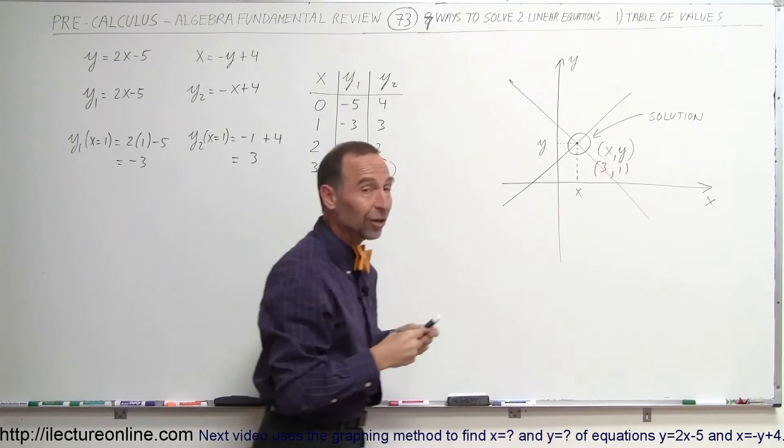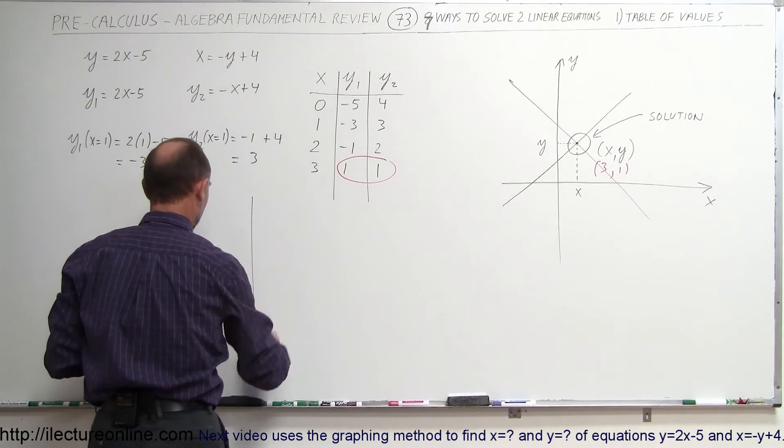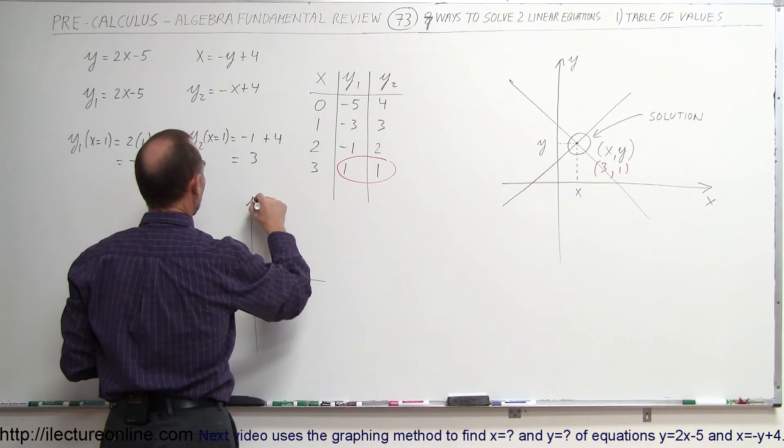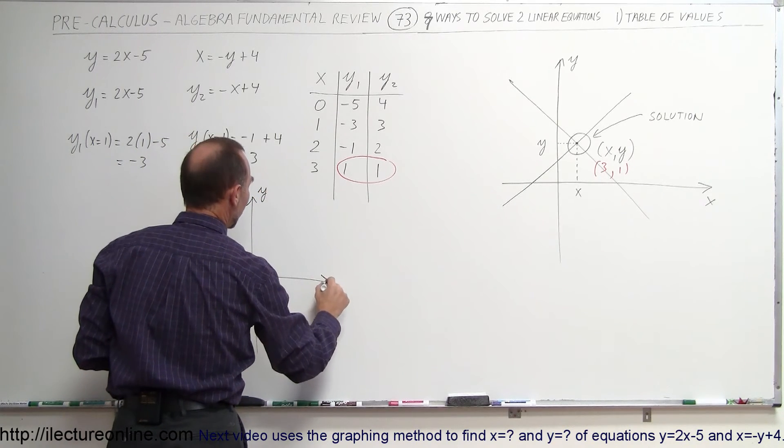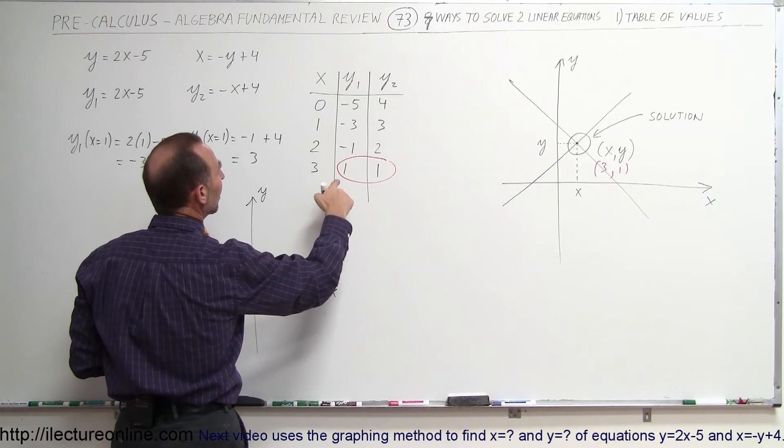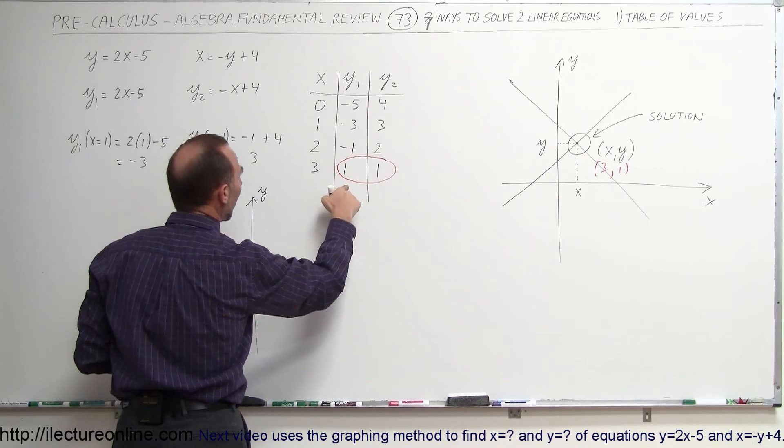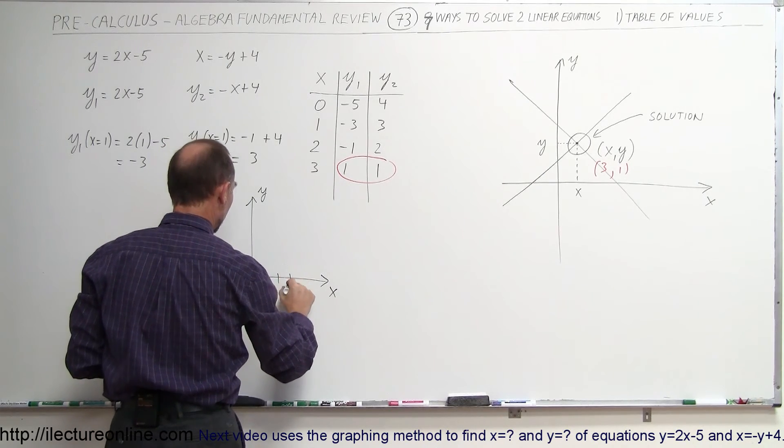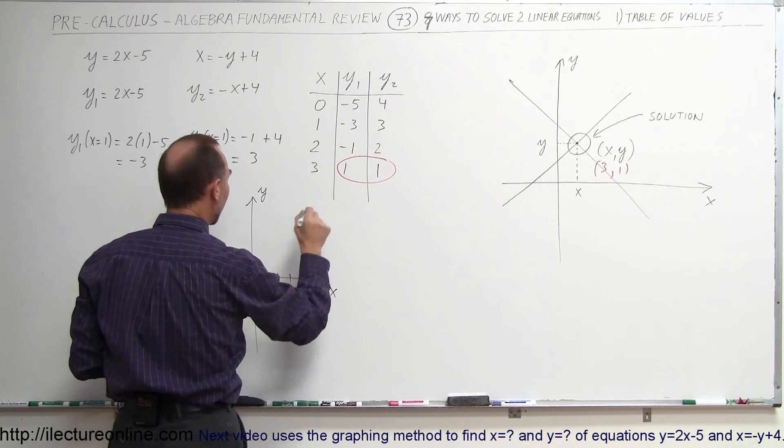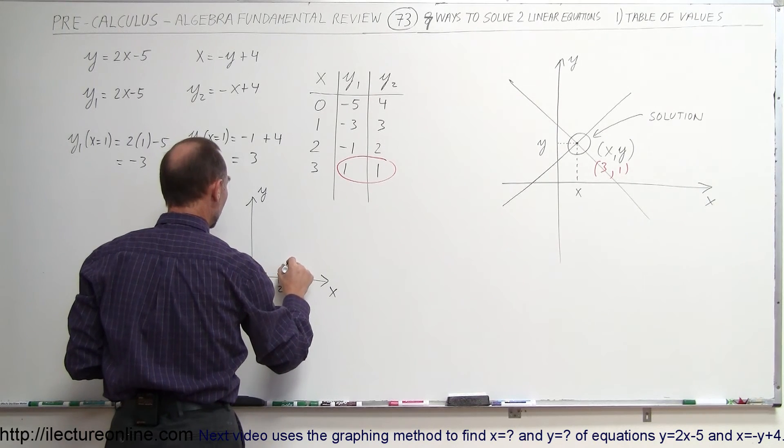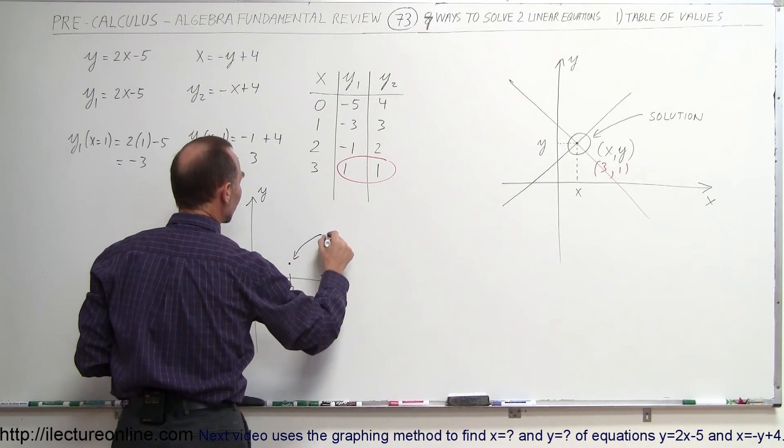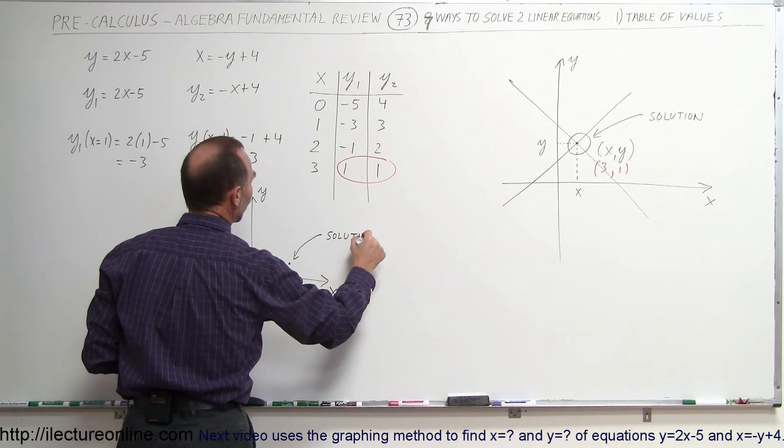Now, what does that look like when I put on a graph? Here I have my y-axis, my x-axis, and I'm looking for x equals 3, y equals 1, 1, 2, 3, and y equals 1, so where the two meet, right there, is the solution to my problem.